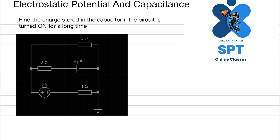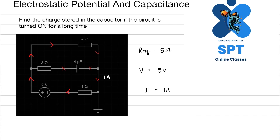It is clear that there is no current flowing through the capacitor branch, which means the entire current is flowing through the external path. The external path consists of the 5 volt source, the 4 ohm resistor at the top, and the 1 ohm resistor at the bottom in series. The equivalent resistance is 5 ohms, and the supply is 5 volts, so the current will be 1 ampere flowing through the external circuit.